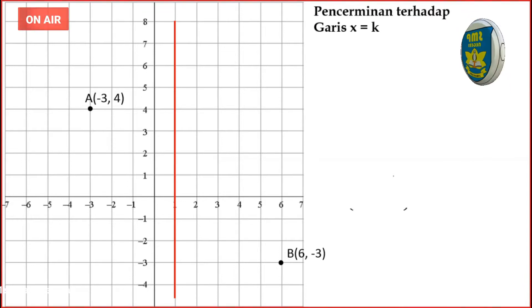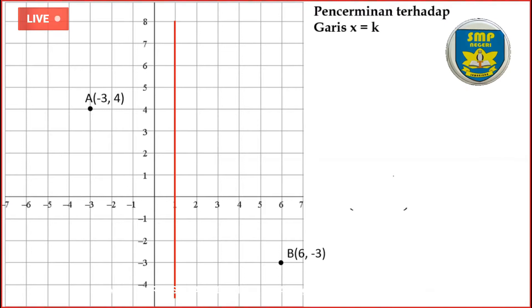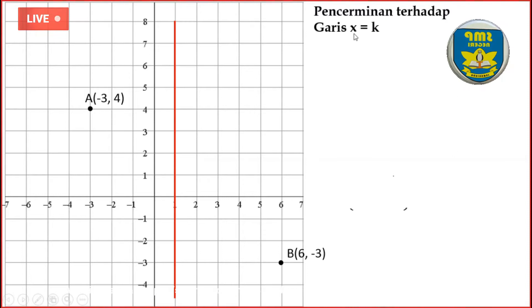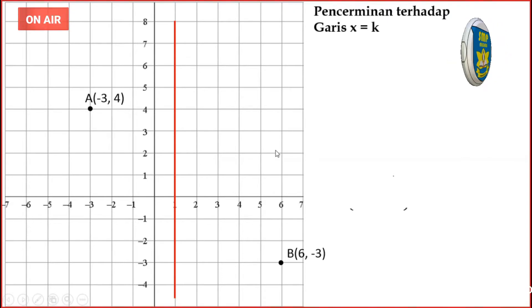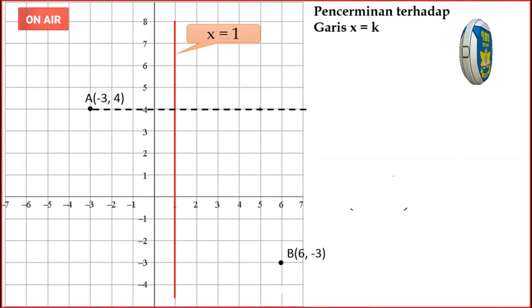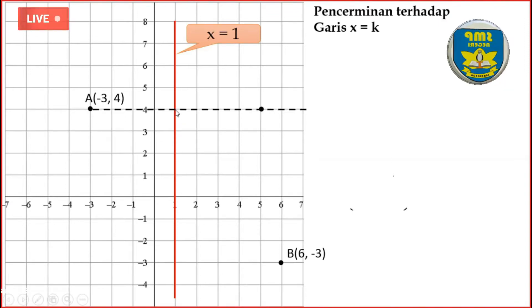Kalau sejajar dengan sumbu Y, apa yang kalian dapatkan kemarin jika pencerminan terhadap sumbu Y? Apanya yang berubah? Kalau misalnya titik A(X,Y), yang berubah adalah X-nya. Juga demikian terhadap pencerminan terhadap garis X sama dengan K. Karena X sama dengan 1 sejajar dengan sumbu Y, maka yang berubah adalah X-nya. Ini sebagai cerminnya sekarang. Ingat cara pencerminan: dari titik ke cermin sama jarak dari cermin ke bayangan.